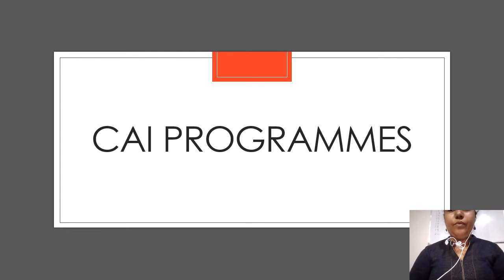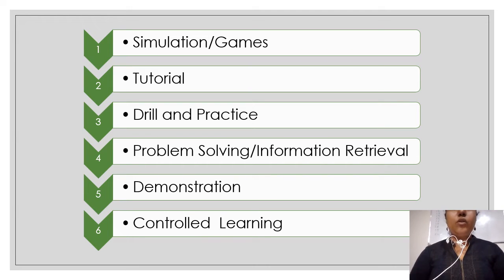CAI programs: First is simulation or games. Second is tutorial. Third is drill and practice. Fourth is problem solving. Fifth is demonstration. And sixth is control learning. Now let us learn about them one by one.